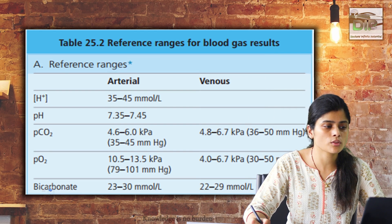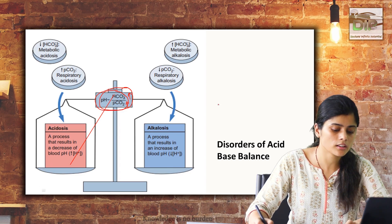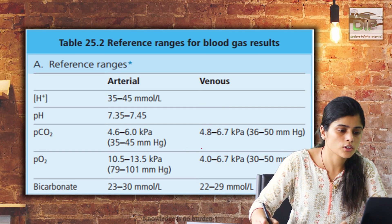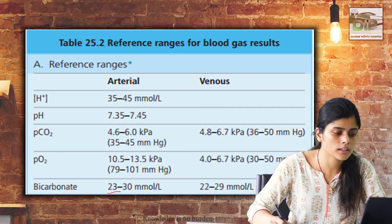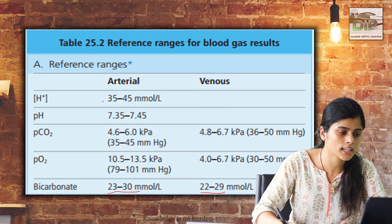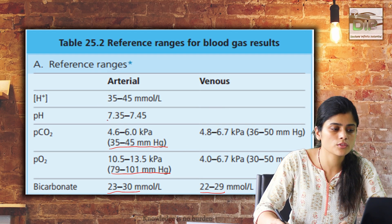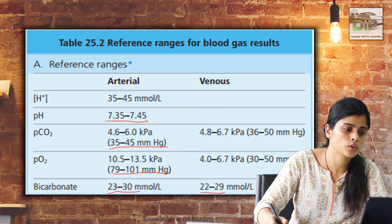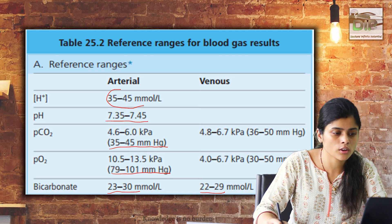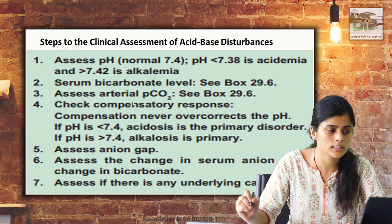These are the normal ranges: bicarbonate in arterial blood is 23 to 13, venous is 22 to 29, pCO2 is 35 to 45 mmHg, pO2 is 79 to 100, pH we all know is 7.35 to 7.45, and H+ concentration is 35 to 45 mmol per liter.